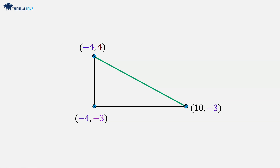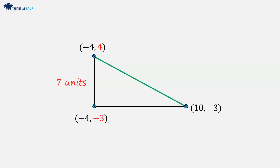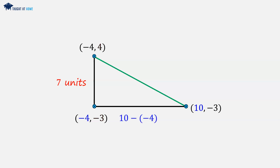Now let's calculate the height. The height is the y value take away the y value. So this is 4 take away minus 3, which is 4 add 3, which is 7 — so 7 units. Let's find the length. We are going to subtract the x value of one point from the x value of the other. So it will be 10 take away minus 4, which is 10 add 4, which is 14 units.